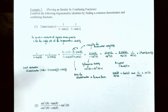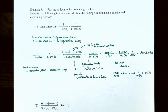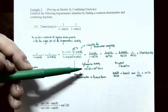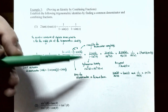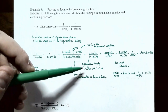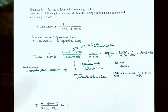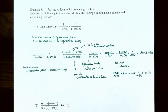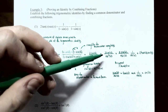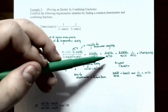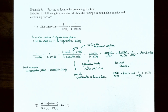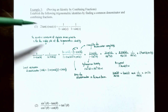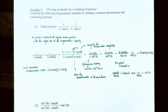The numerator is just 2 sin x. In the denominator, 1 − sin²x can be replaced using the Pythagorean identity: sin²x + cos²x = 1. Solving for cos²x by subtracting sin²x gives cos²x = 1 − sin²x. So the denominator is really just cos²x, giving us 2 sin x in the numerator and cos²x in the denominator. We need to arrive at 2 tan x · sec x on the left side.